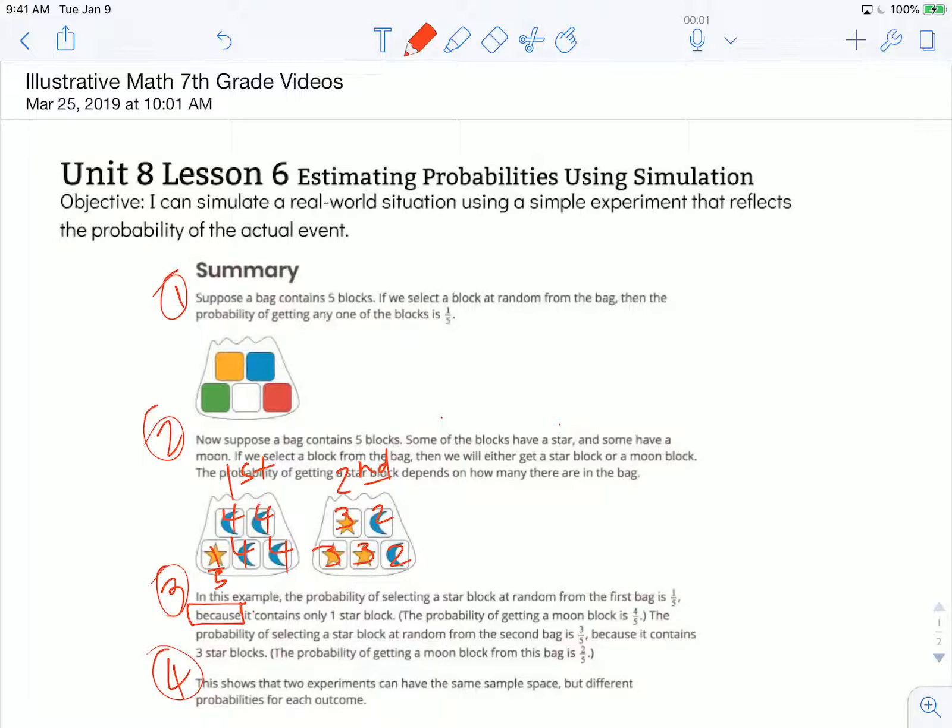The probability of getting a moon block is four out of five because there's four of those out of the five blocks that are in the bag. The probability of selecting a star block at random from the second bag is three fifths or three out of five because it contains three star blocks. The probability of getting a moon block from the bag is two out of five or two fifths because two out of five of the blocks are moons.